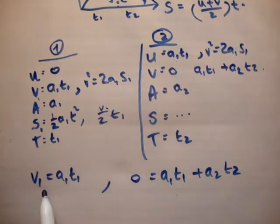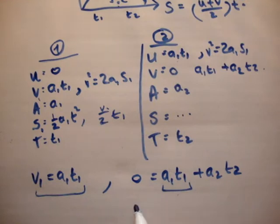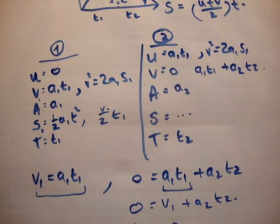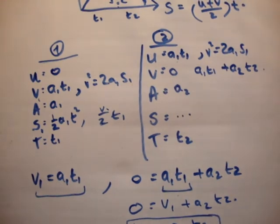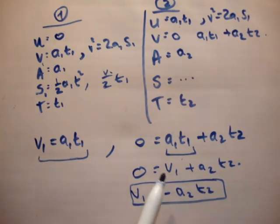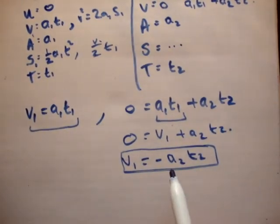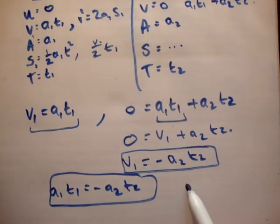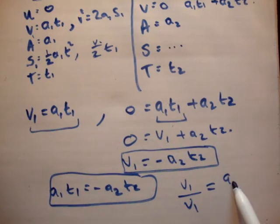We know that v1 = a1·t1, and substituting into 0 = v1 + a2·t2 gives v1 = −a2·t2. Now we have two expressions for v1, so we can write a1·t1 = −a2·t2. We can form a ratio: a1·t1 over −a2·t2 equals 1, or equivalently a1/a2 = −t2/t1.